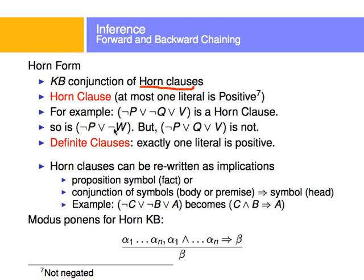We're going to use horn clauses because they have nice properties. A more specific case of a horn clause is a definite clause, where exactly one literal is positive. One of the good things about horn clauses is that they can be rewritten as implications, with a fact or conjunction of symbols as the premise, then an implication symbol, and then a symbol or conclusion called the head — premise implies head.